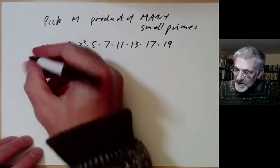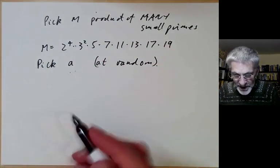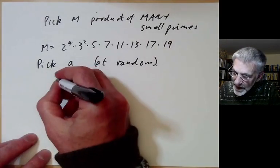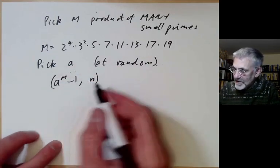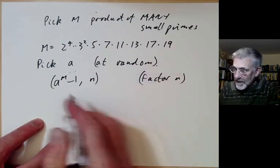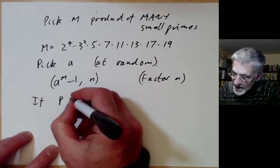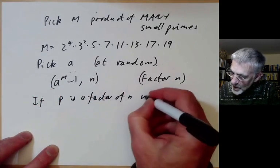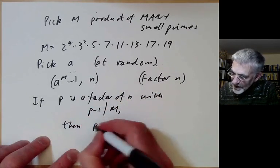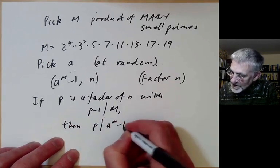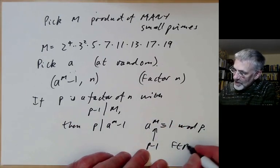The idea is we pick some number a at random. We don't really care what it is, as long as it's not 1 or 0 or something. And we look at a to the m minus 1 and take the greatest common divisor with n. So we're trying to factor the number n. And if p is a factor of n with p minus 1 divides m, then p is going to divide a to the m minus 1, because a to the m is congruent to 1 mod p. Here we use Fermat's theorem.